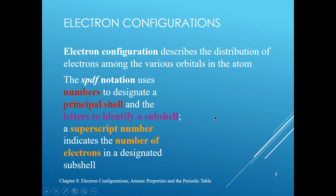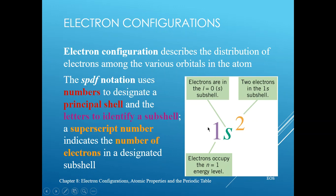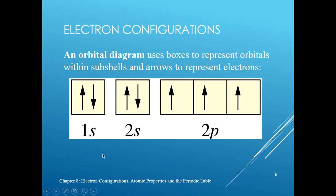When we talk about electron configuration, we're talking about how the electrons are distributed among the orbitals in an atom. The most common way to represent it is by using the SPDF notation, which uses numbers to designate the principal shell, letters to identify the subshells, and a superscript indicating the number of electrons within the designated shell. For example, 1s² — the 1 represents the first energy shell where n=1, the s refers to the s orbital where l=0, and the superscript 2 indicates the number of electrons within the 1s sub-level.